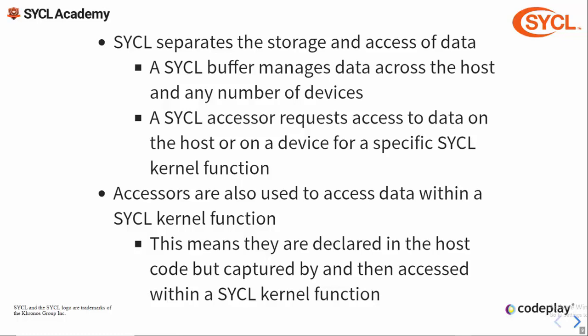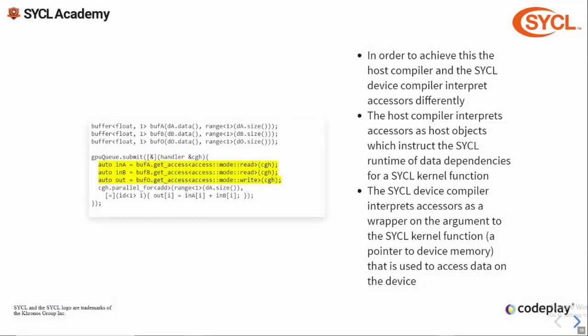As well as describing requirements to access data, accessors are captured or stored in a kernel function and used to access the data once in the kernel. To achieve this, the host compiler and device compiler interpret accessors differently. The host compiler interprets accessors as host application objects used to describe data dependencies to the runtime. The device compiler interprets accessors as a wrapper over a pointer to the data, which can be used much like a regular pointer to access the data once in the kernel.